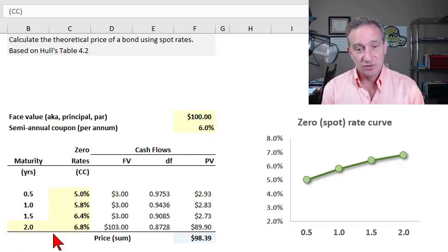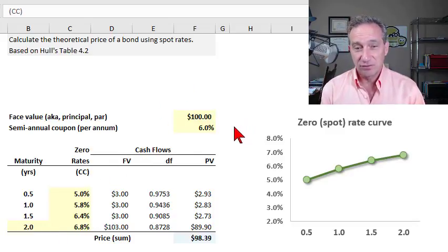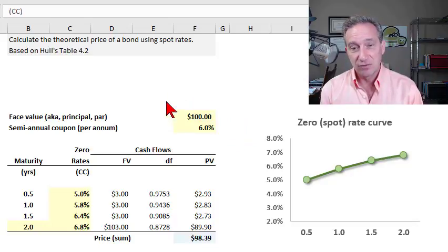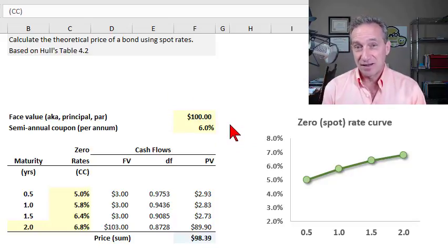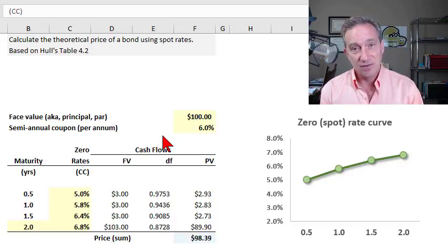We need a few assumptions for a bond. Those are highlighted in yellow, starting with the face value of the bond, also called the principal or par value, which is typically either a thousand dollars or what we see here, one hundred dollars. And we also need to know the coupon rate for the bond.